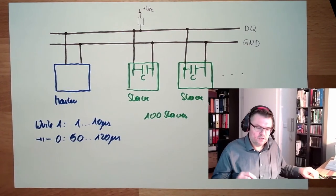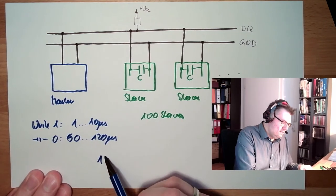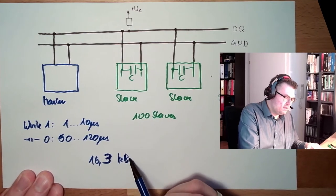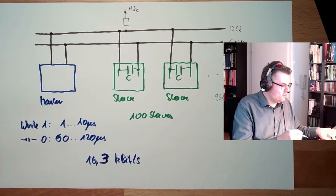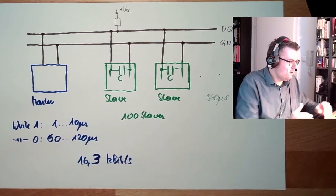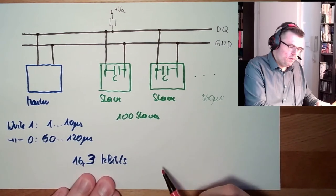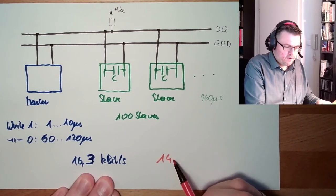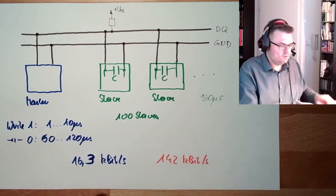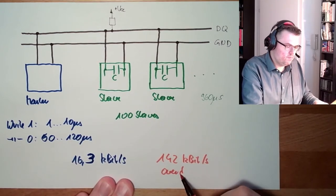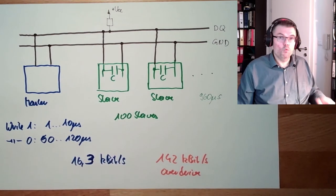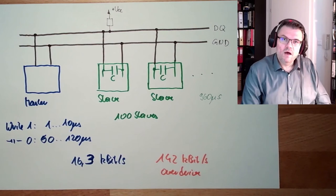And the transfer rate is usually 16.3 kilobit per second. There's an overdrive mode. Then this timing is shorter. This timing is shorter. And then we can go up to 142 kilobit. Also not too low. So this one-wire bus, this is overdrive. It seems to be good. And I said 100 slaves. 100 slaves. How are they identified?